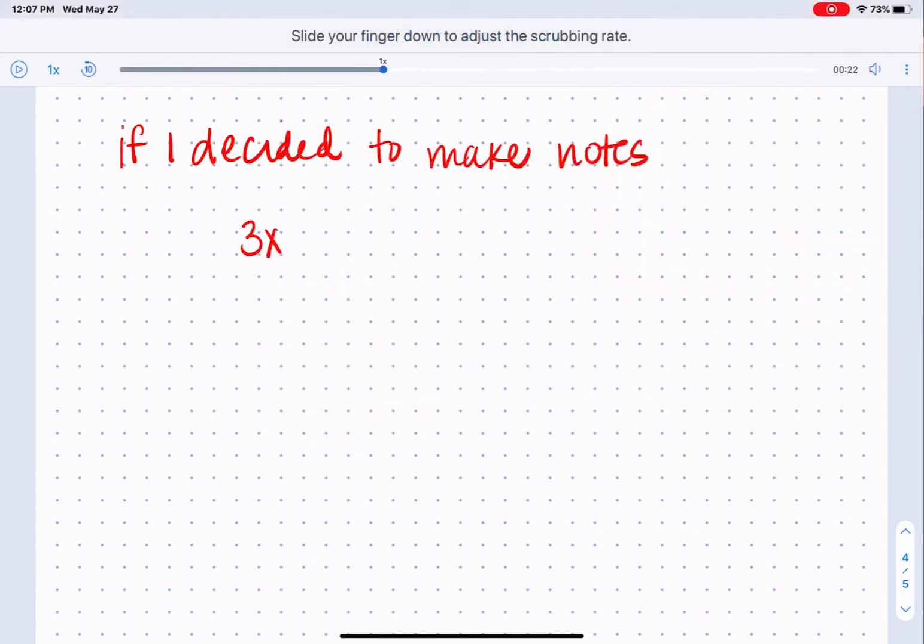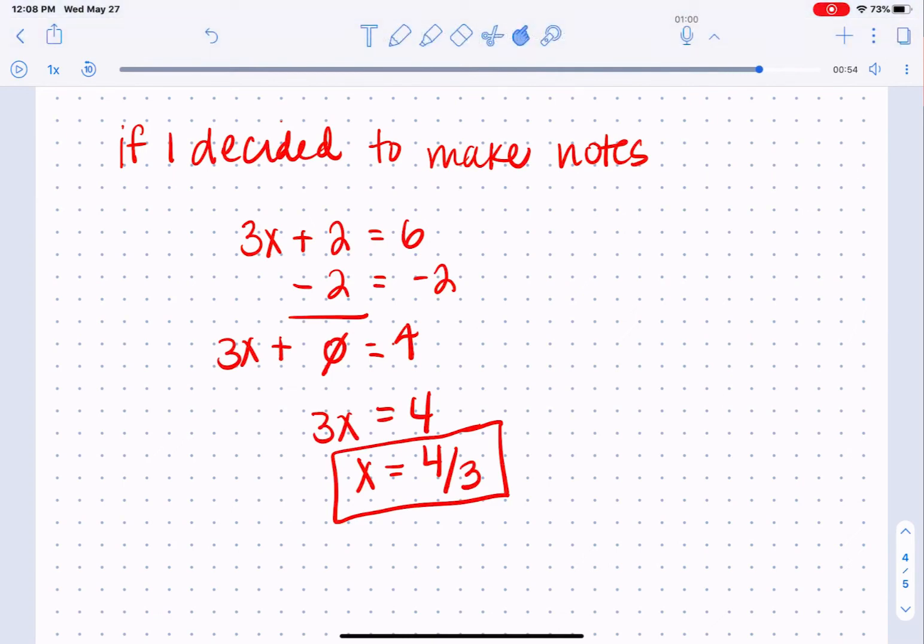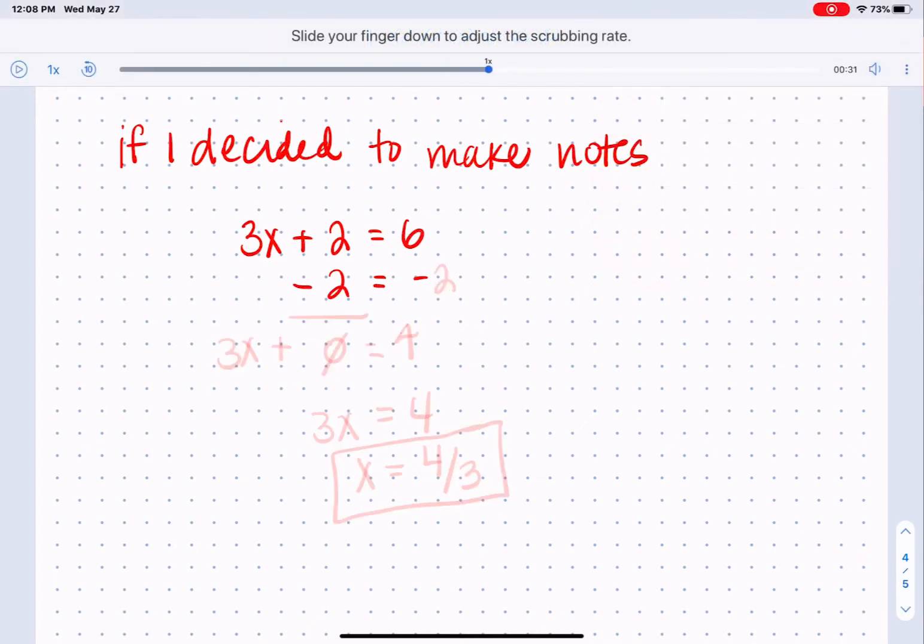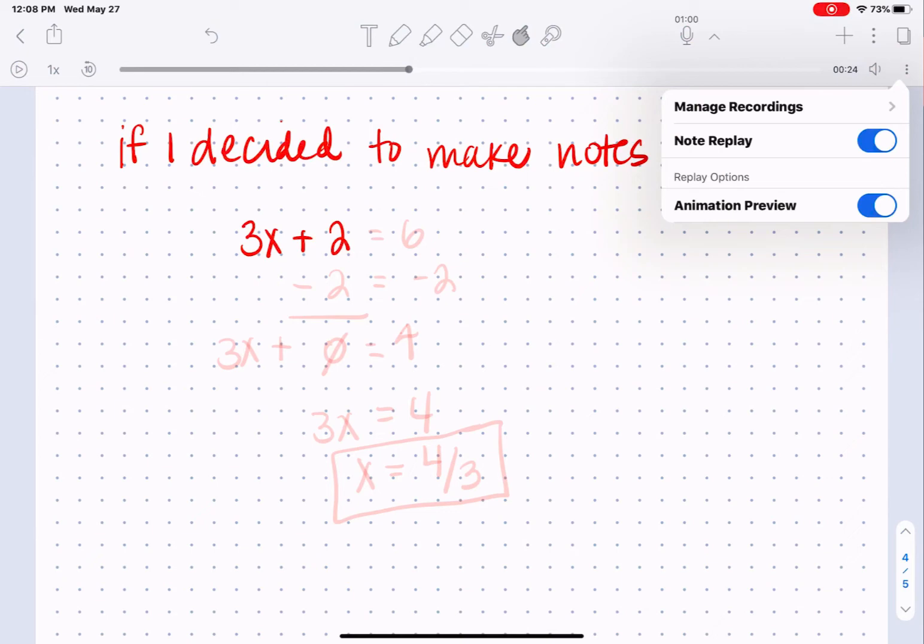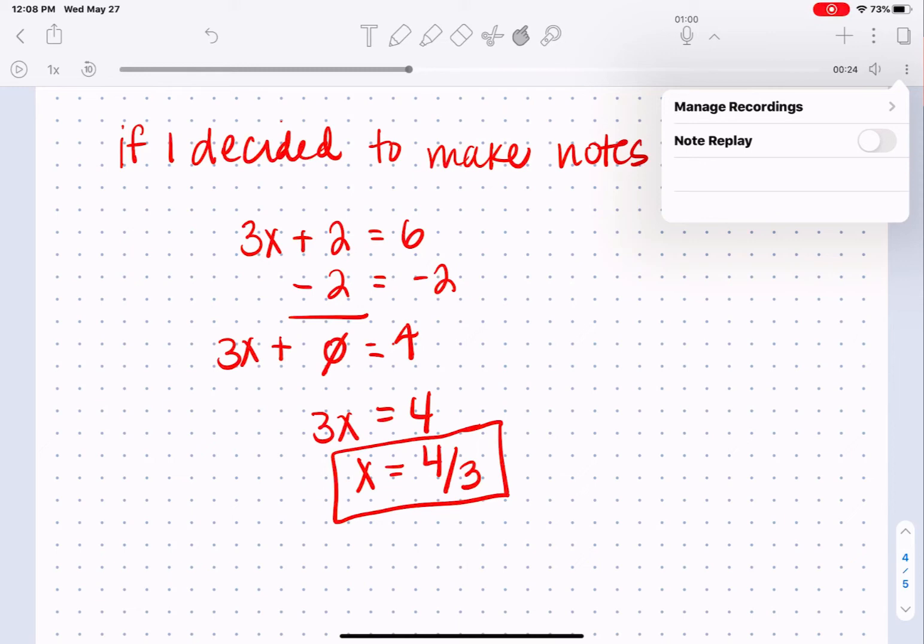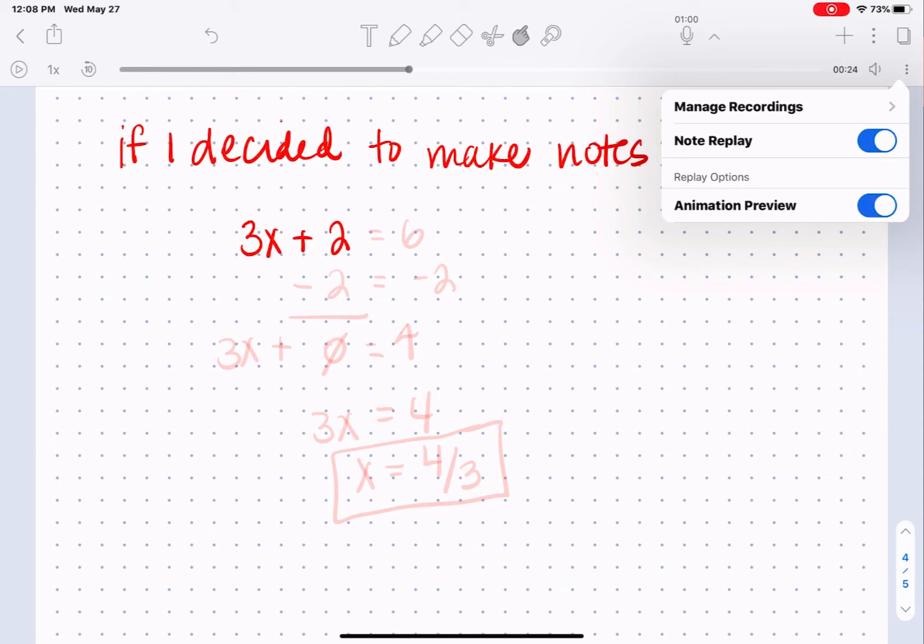I've got to scroll and then watch all the way through to see it happen. So animation preview kind of shows the opacity version as you see here. And then the note replay would turn that replay completely off. So then I'm just listening to the audio and I'm not watching that animation happening in my notes. I like to have both turned on because it's really neat. Just me.